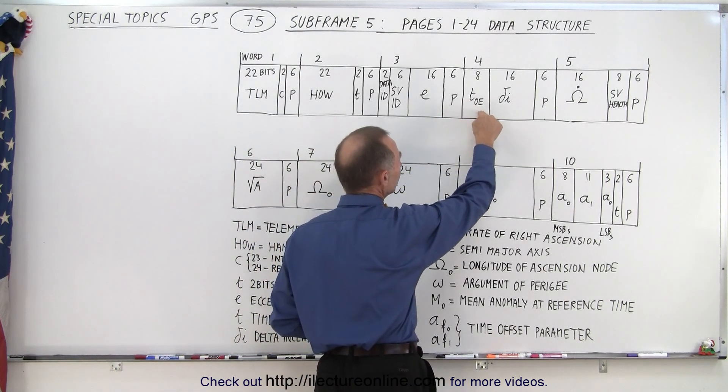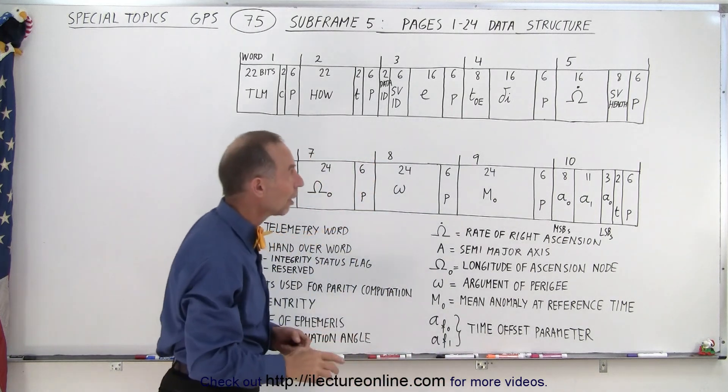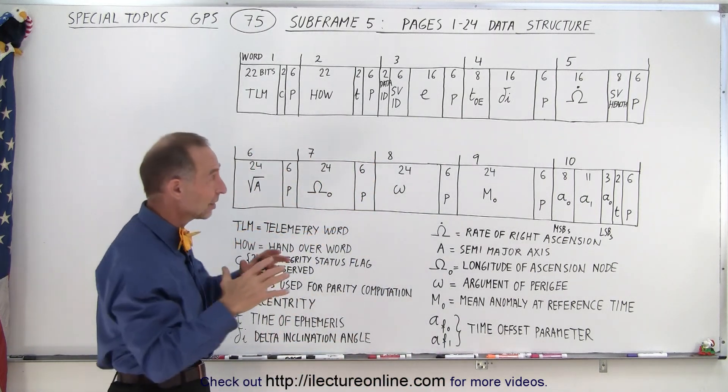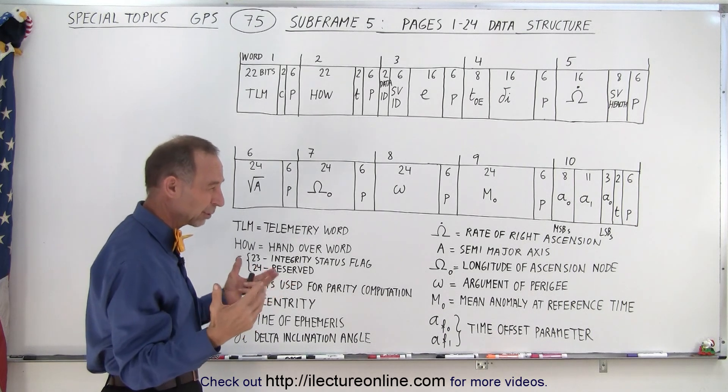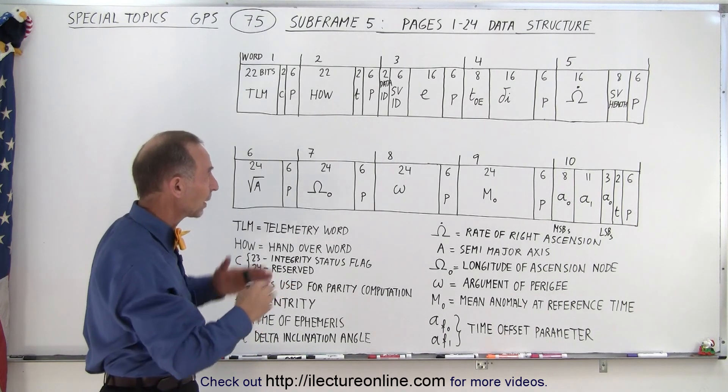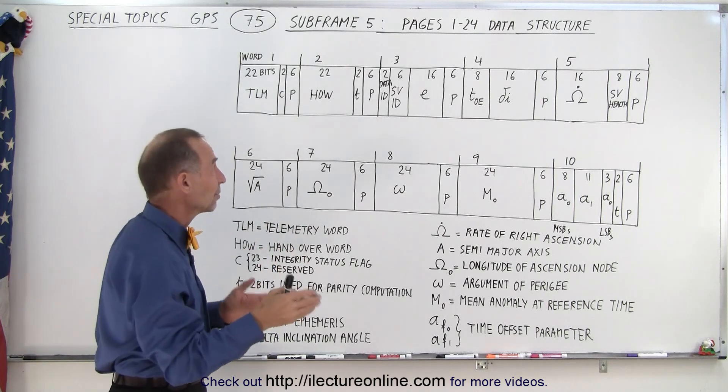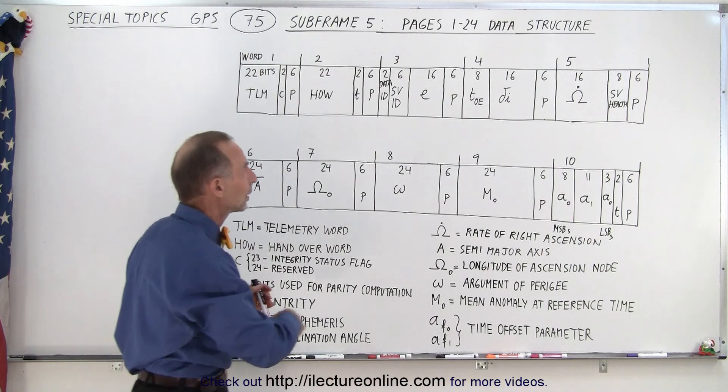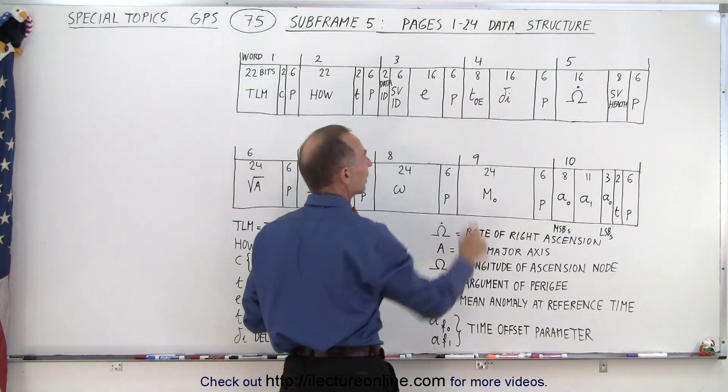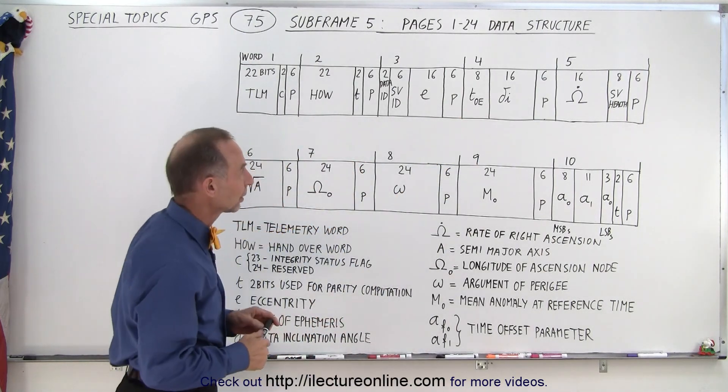Then we get to word four. So the first eight bits are associated with the time of ephemeris but that is I think the LSB to that is like 2 to the 12th or 2 to 11th or something like that. So it's a big number. We don't need to have an accurate time. We just need to make sure that we're in the right data set and we can figure that out by having a rough idea what time of the week we're dealing with here.